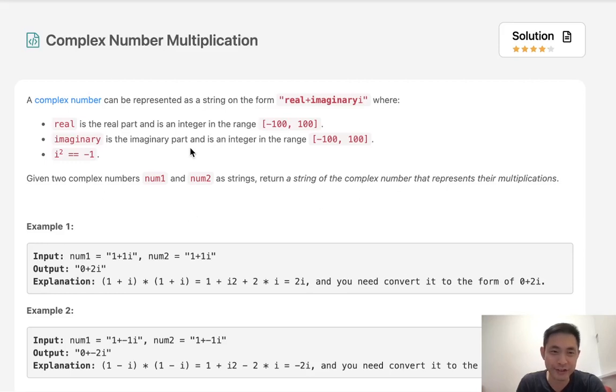Welcome to August LeetCode Challenge. Today's problem is complex number multiplication. A complex number can be represented as a string on the form real plus imaginary i, where real is the real part and is an integer in the range of negative 100 to 100, and imaginary is the imaginary part, same thing. Now i squared is equal to negative 1.